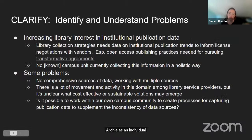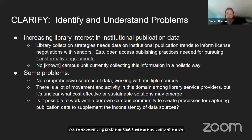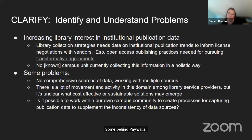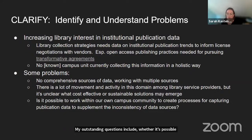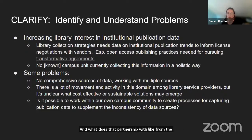Another thread was to better understand my library's needs to gather and organize the research output of our institution's researchers in order to form collection strategy and negotiations with vendors, especially for our very expensive e-journal packages. We are experiencing problems that there are no comprehensive sources of citation data for institutions' affiliates — we are cobbling together data from multiple sources, some behind paywalls. My outstanding questions include whether it's possible to incentivize researchers themselves to contribute their publication data to cover gaps in our data sources, and what value does it provide to other campus stakeholders if the library is curating this information?